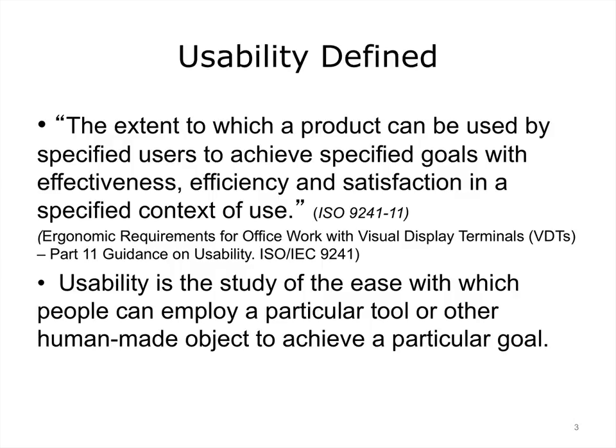Usability is defined by the ISO as the extent to which a product can be used by specified users to achieve specified goals with effectiveness, efficiency, and satisfaction in a specified context of use. You will note that the ISO is not talking about computer systems specifically. Usability is applied to any product.